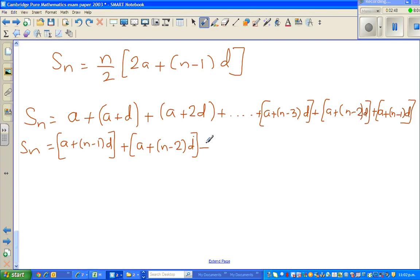You'll understand where I'm going. Plus, the third term from the back is A plus N minus 3 times D, plus dot dot dot, plus then I'm writing backwards, A plus 2D, plus A plus D, and then I got A.